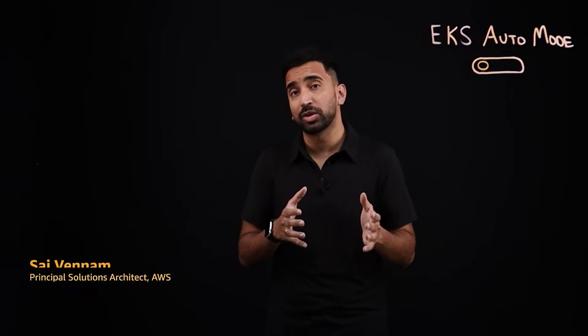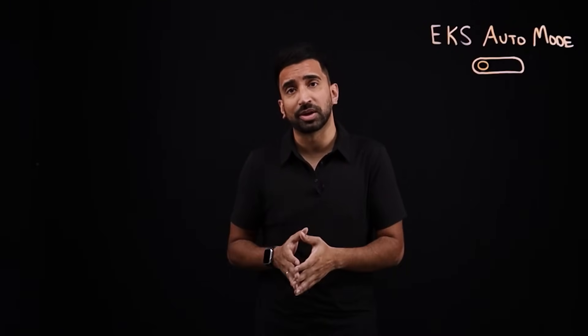Let's talk about Amazon EKS Auto Mode, an all-new feature that's changing the way that customers work with their Kubernetes workloads on AWS. Kubernetes is fantastic for giving its users an advanced amount of control with exactly how their applications run and operate, but with that control comes a level of complexity.